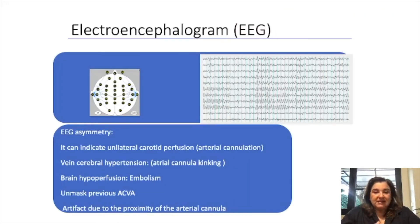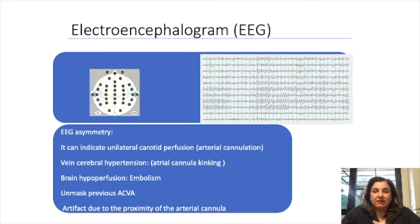Electroencephalogram asymmetry can indicate unilateral carotid perfusion, venous cerebral hypertension, brain hypoperfusion, and may show previous arrays or artifact due to the proximity of the arterial cannula.